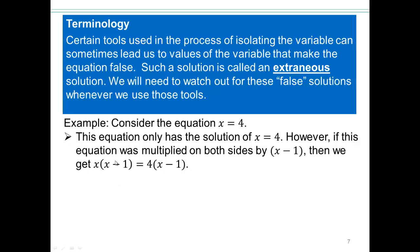However, in this equation, x equals 1 is also a solution because I'll get 0 equals 0. But 1 is not a solution to the original x equals 4 equation. So 1 would be an extraneous solution to the x equals 4 equation.